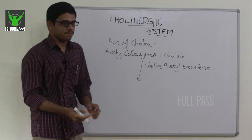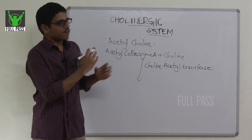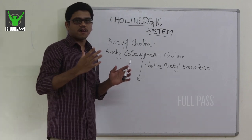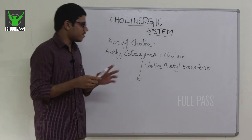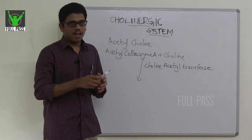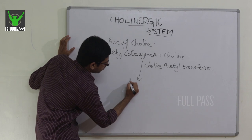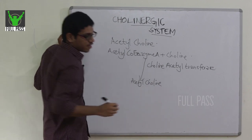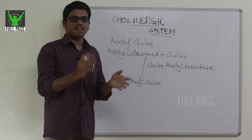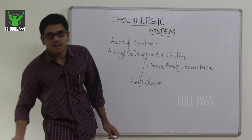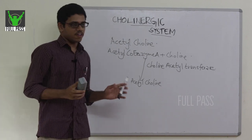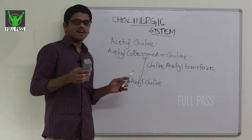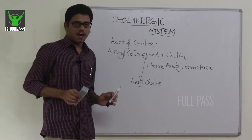This reaction is catalyzed by the enzyme choline acetyltransferase. The reaction takes place inside the axon — the nerve consists of a dendrite, cell body, axon, etc. — and it takes place in the cell body and axon. The acetylcholine formed is then stored inside synaptic vesicles, or in the ionic medium of the axon.